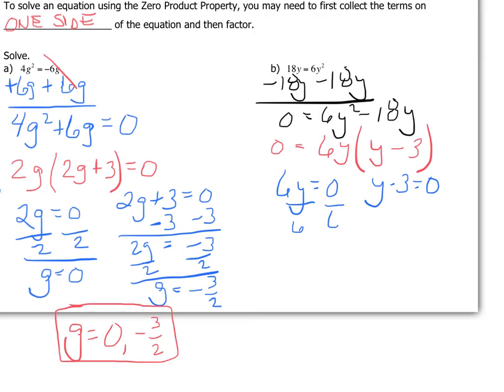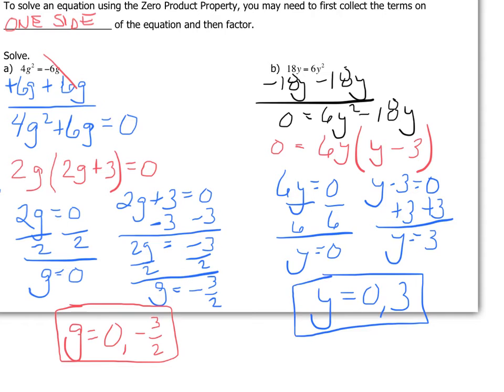Divide by 6, y is 0, and y equals 3. So in this situation, 0 and 3 are both solutions to that equation.